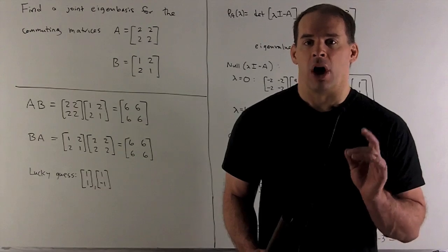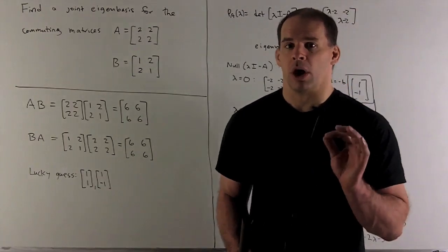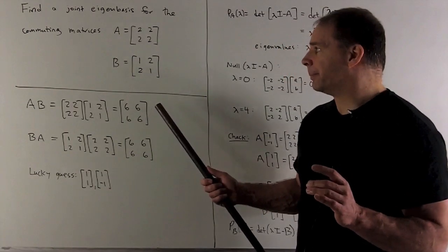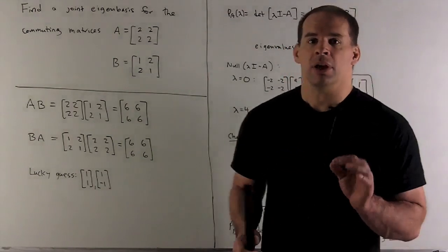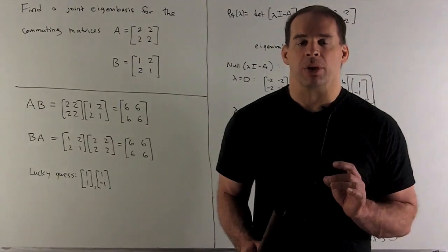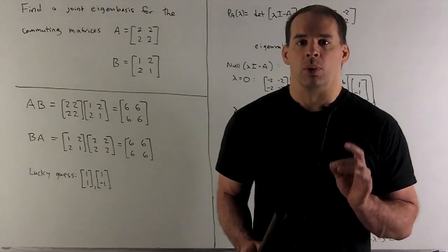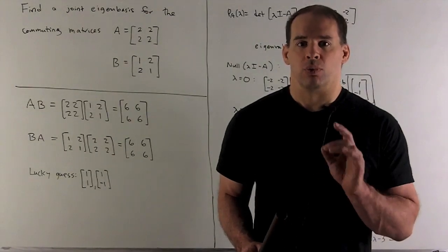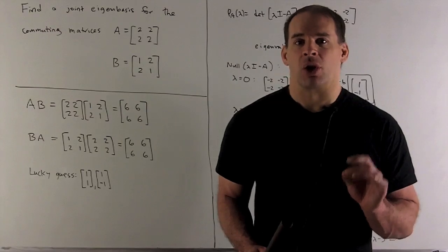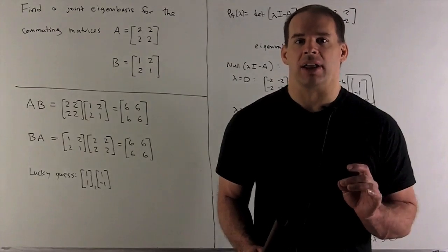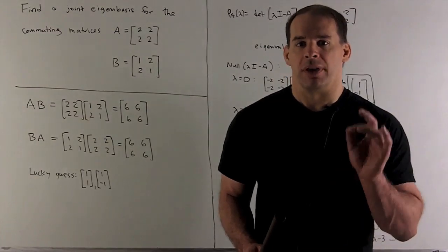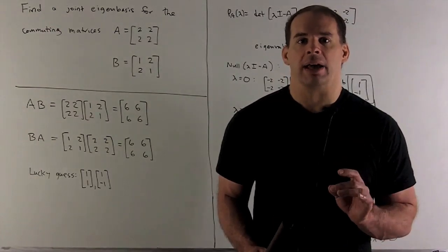This is what we call simultaneous diagonalization. In our case, we already saw the commuting property. So why are these diagonalizable? Well, real symmetric matrices are always diagonalizable, so our theorem is going to apply.